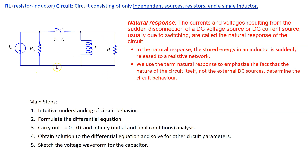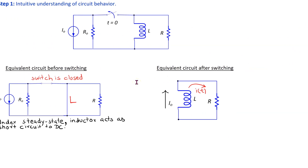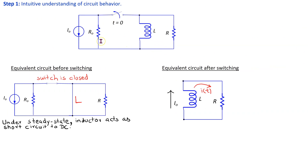This is the circuit used to study the natural response of an RL circuit. The inductor is here. The resistor is here. We have a switch, a current source, and a resistor R0 in parallel with the current source. The main steps in analyzing and understanding the natural response are shown here. To understand what is happening in this circuit, we look at it before switching and after switching. This is the equivalent circuit before switching.